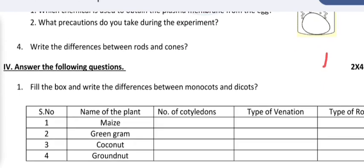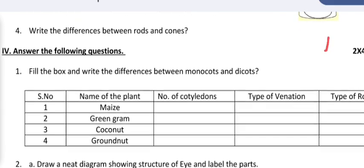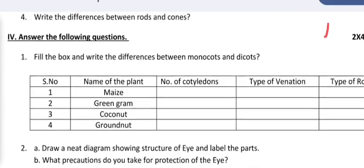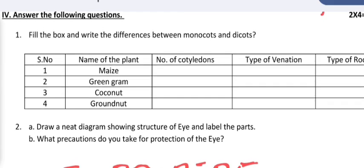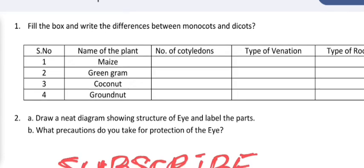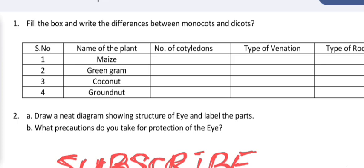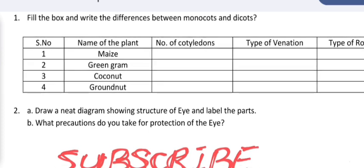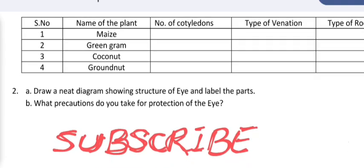Fourth question: answer the following questions. Number one, fill the box and write the differences between monocots and dicots. Serial number, name of the plant, number of cotyledons, type of venation, type of root. Number two: draw a neat diagram showing structure of eye and label the parts.